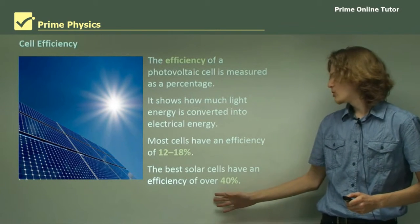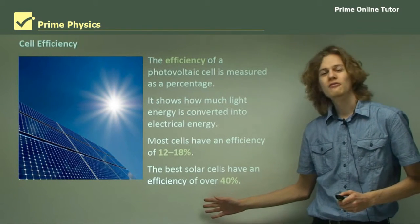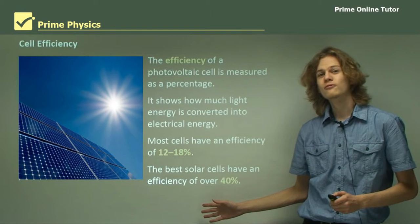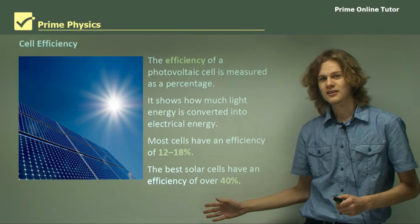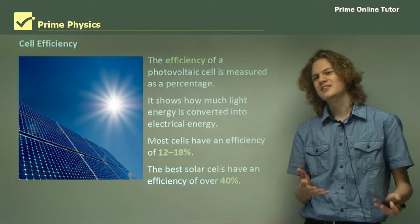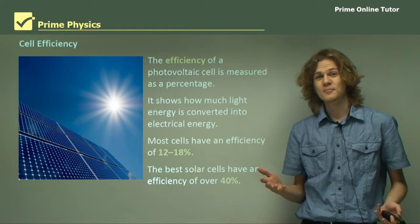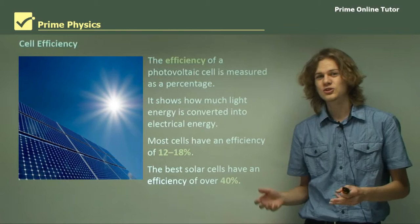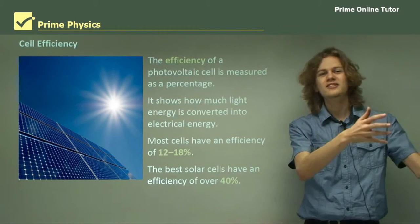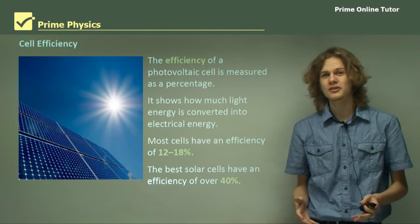The best solar cells in the world have an efficiency of more than 40%, but still less than 50%. So, as you can imagine, it's pretty hard to turn light energy into electrical energy.